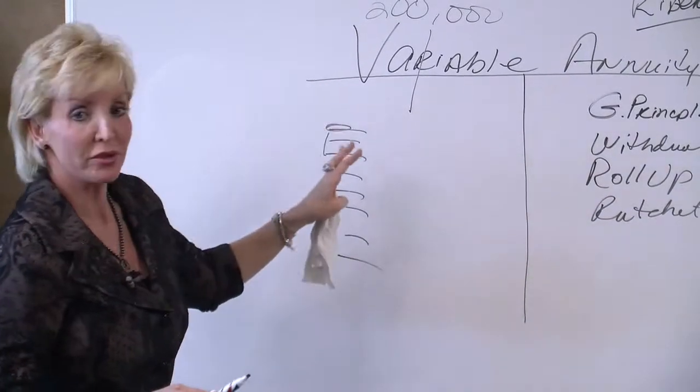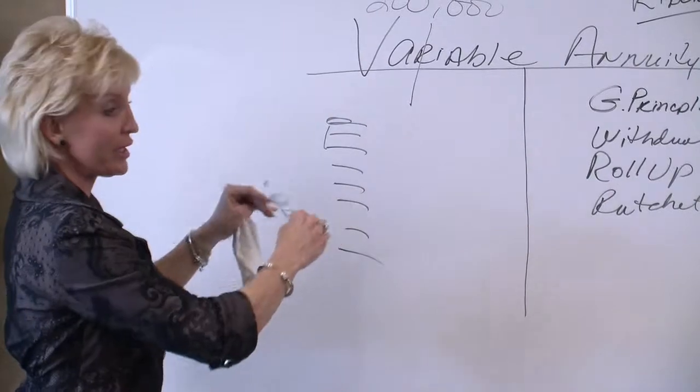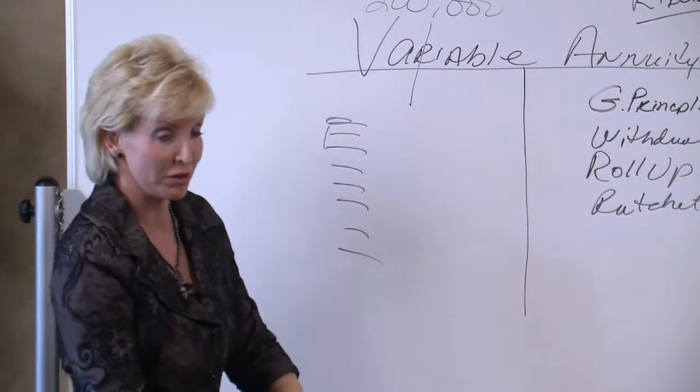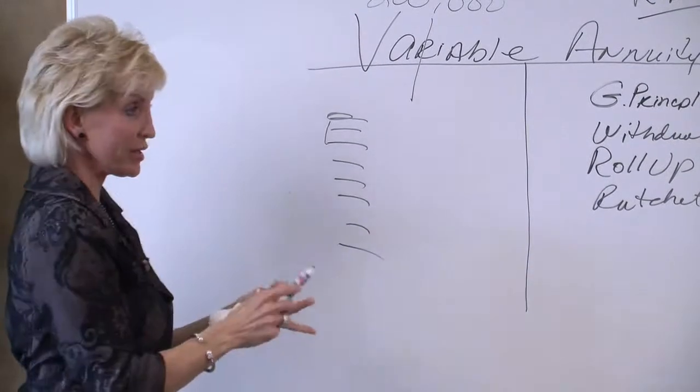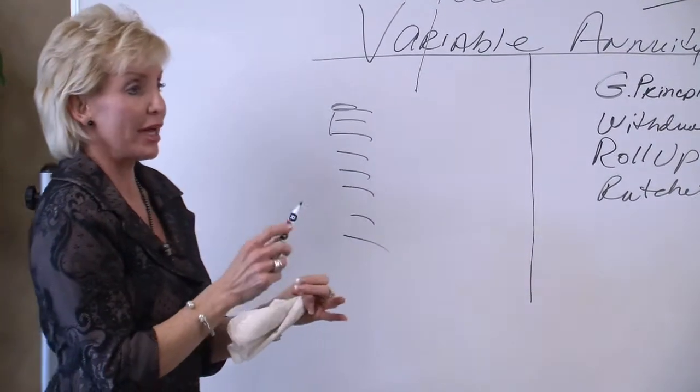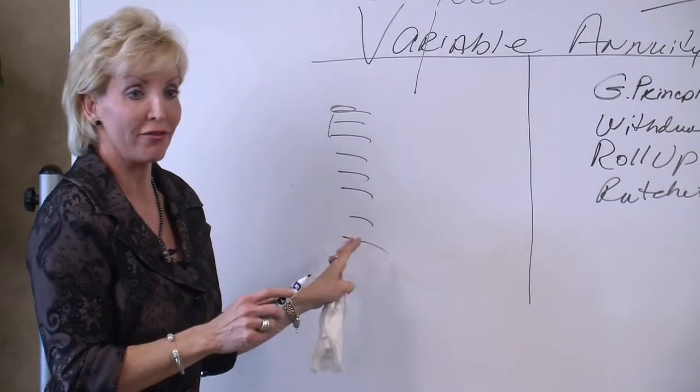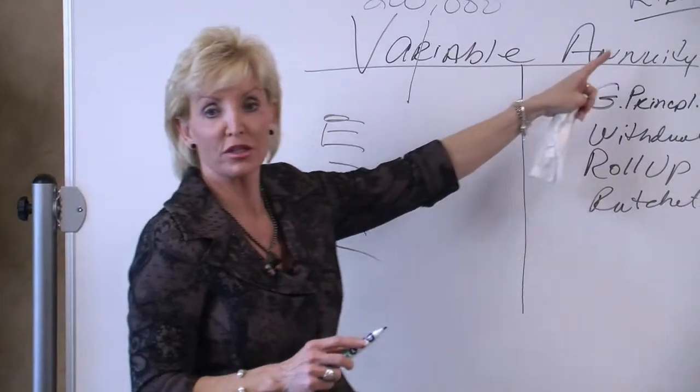But a variable annuity is an account where you have mutual fund sub-accounts. You put your money in. Your money is going to go up with the market and down with the market. There are a lot of fees in here, like mortality and expense fees, asset fees, sub-account fees, and then you have the fees for your riders.